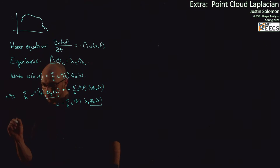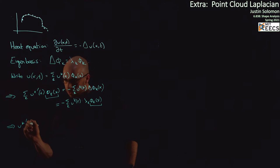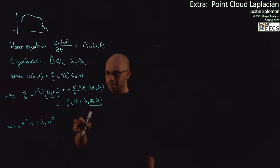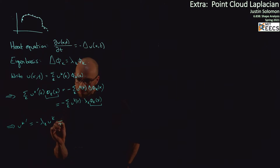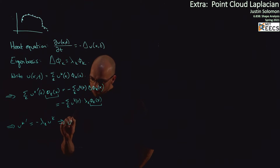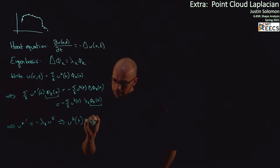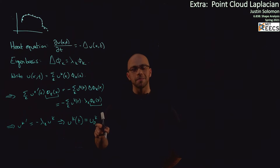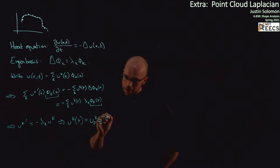Since the φ_k's form an orthonormal basis, the coefficients must be equal on both sides, giving us an ordinary differential equation: u_k'(t) equals minus λ_k u_k(t). This is an easy differential equation to solve. In particular, u_k(t) equals u_k^0 — the value of u_k at time zero, which is the initial condition of our PDE — times e to the minus λ_k t.